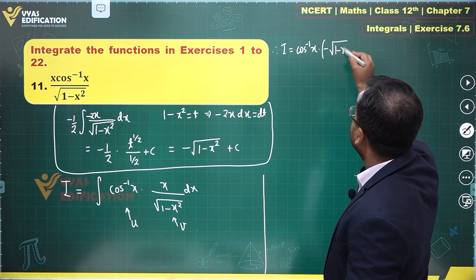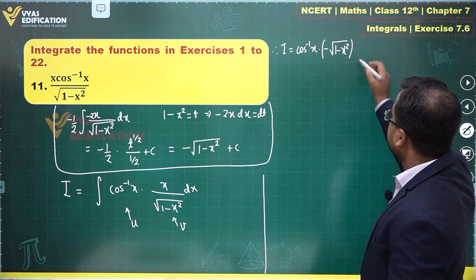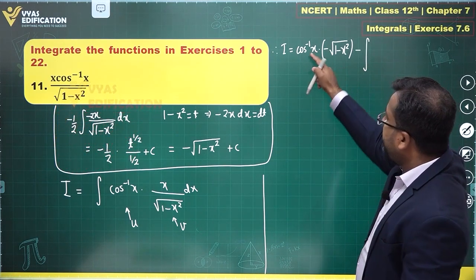minus root of 1 minus x square. What about constant? We don't use a constant at this stage.